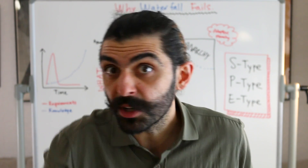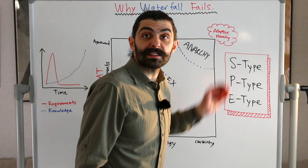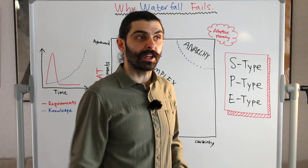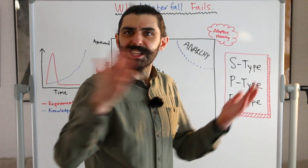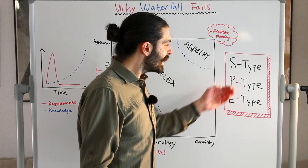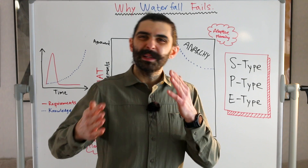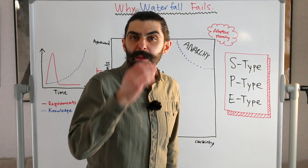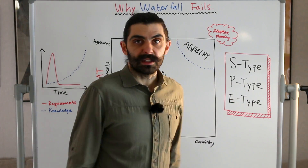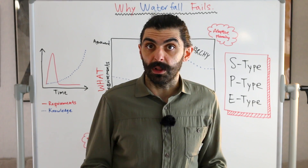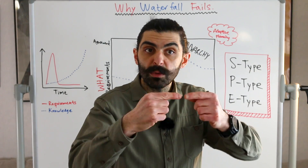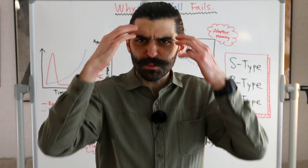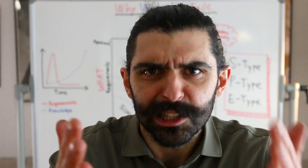So what does this have to do with waterfall? Waterfall is suitable for S-type systems, because we can specify the problem and the solution upfront — so it's okay to go linearly. If you have P-type systems, it's not as obvious; if you allow some iteration, something resembling waterfall might be suitable. But for E-type systems, we just by definition can't use waterfall, because the very idea of an E-type system is that we don't know what we should have built before we've actually built it, deployed it, and looked at what happened. Pretty wild stuff.